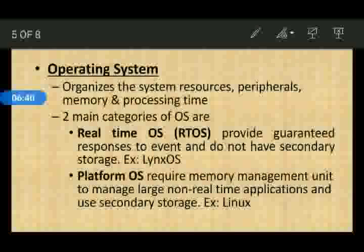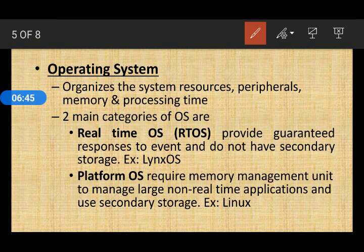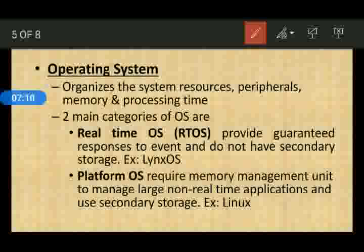The next component is the operating system. The operating system is a very important software component in an embedded system. It is an electronic processing system that controls all the activities — input, output, processing, and storing. For example, a computer also uses an operating system such as Windows or Linux. The OS organizes system resources, peripherals, memory, and processing time.